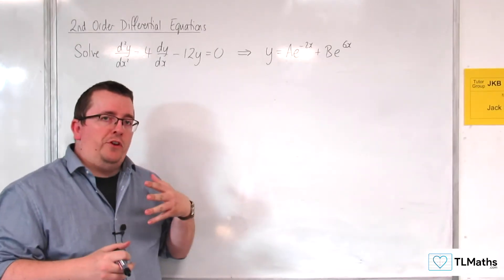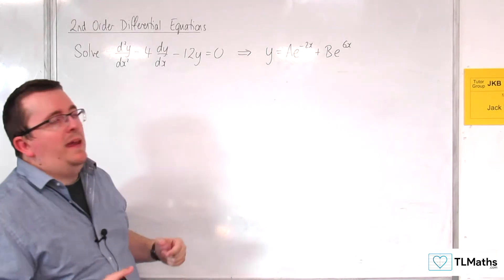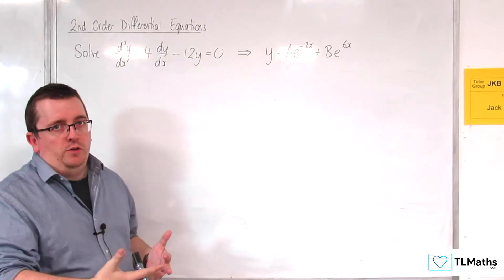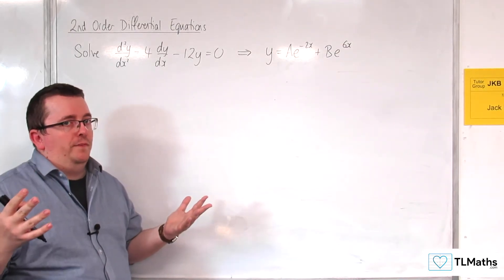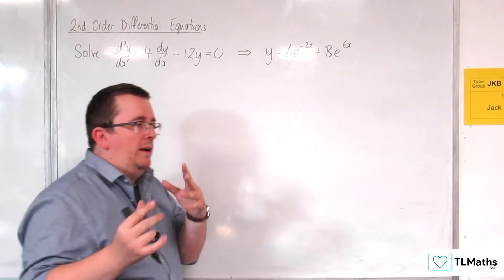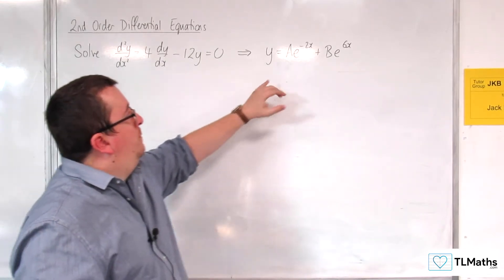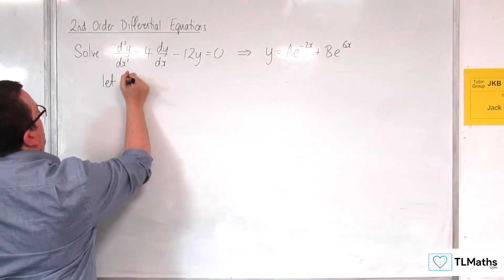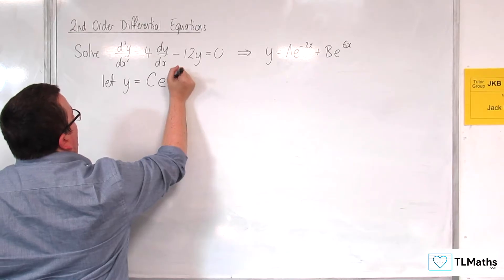So now what we want to do is ask: what would be the format of my solution? Would I need to go through that rigorous process again, or can I guess a solution to start off with? Now you might be thinking that's a bit risky, but let's see if we can. Because they're of this form, something times e to the power of something times x, let's let y be equal to some constant times e to some constant mx.